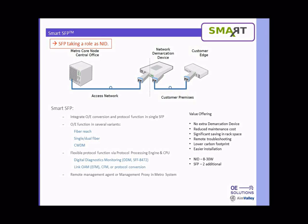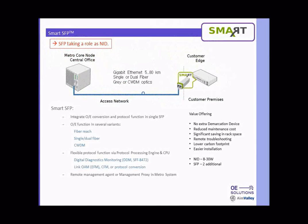How does Smart SFP work? Our Smart SFP takes the role of an NID. The picture shown here is a typical setup for a demarcation box — there is a connection between the metro node and the demarcation device, and then between the demarcation device and the customer edge equipment. By having our Smart SFP, you can replace the demarcation device in the middle; Smart SFP itself works as a demarcation device. It can plug right into the customer edge equipment and integrates OE conversion, which is the typical functionality of an SFP, but with protocol functions on top in a single SFP.